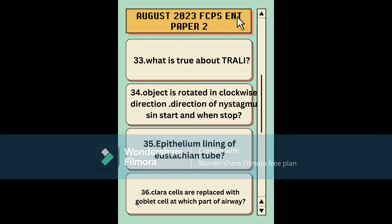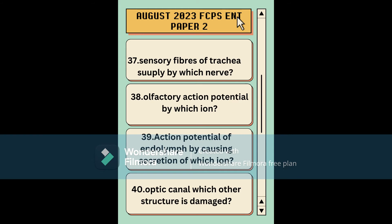There was a question about transfusion reaction — I think the duration of the reaction was asked, specifically about acute lung injury. Then a very weird nystagmus scenario I couldn't answer. A question about the epithelial lining of the Eustachian tube. Then: when Clara cells are replaced by goblet cells, in which sandwiched part of the airway — options included respiratory bronchioles and terminal bronchioles. Also a question about sensory fibers of the trachea and nerve supply.